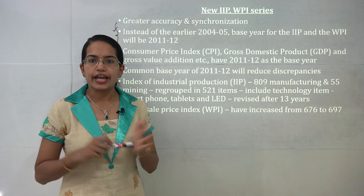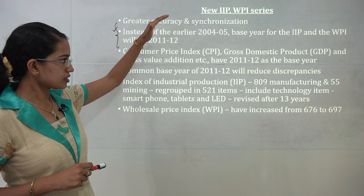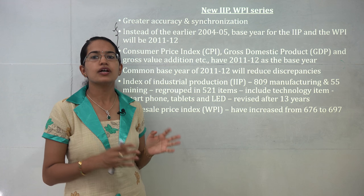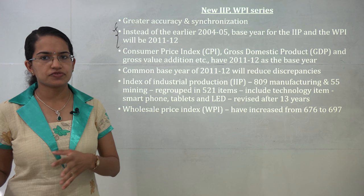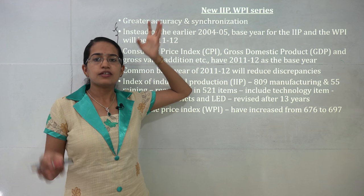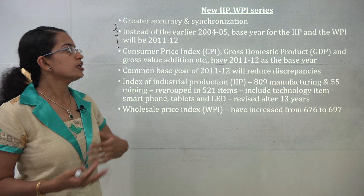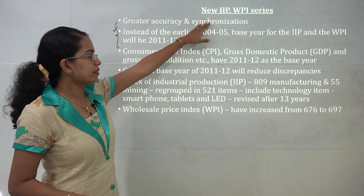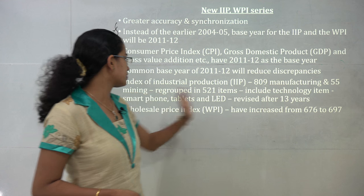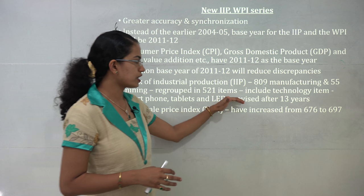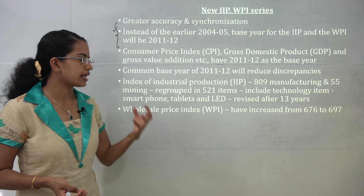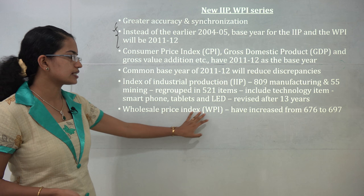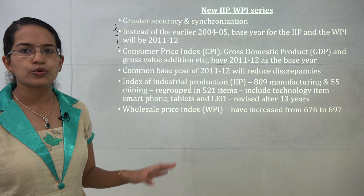Very important: the new IIP and WPI series. The Wholesale Price Index and the Index of Industrial Production have been revised with a new base year of 2011-12, aligning them with GDP and CPI which had already shifted to 2011-12. The old base year was 2004-05. IIP now groups 809 manufacturing and 55 mining items under 521 items, and now includes technology items like mobile phones, LEDs, and tablets — revised after 13 years. The number of WPI items has increased from 676 to 697, adding around 20 new items.